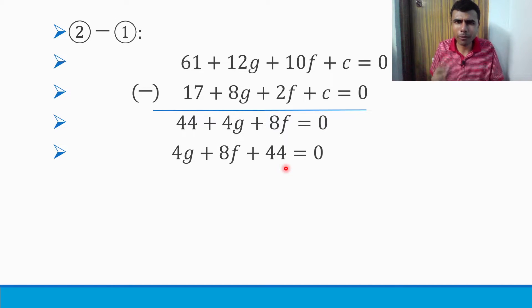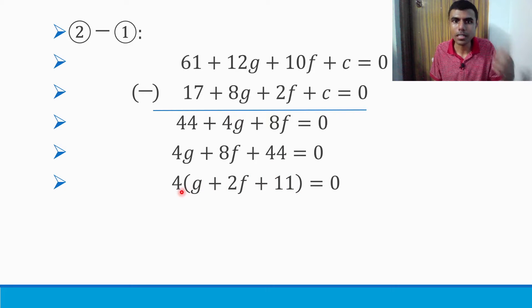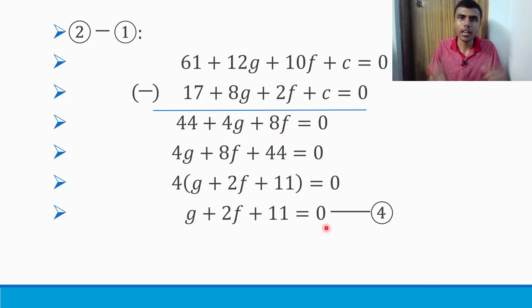The numbers are a little big. Can we reduce them? We can take 4 common. Taking 4 common: 4(g + 2f + 11) = 0. Sending the 4 to the right side, 0 by 4 is nothing but 0. So g + 2f + 11 = 0, marked as equation 4.